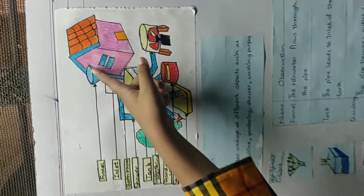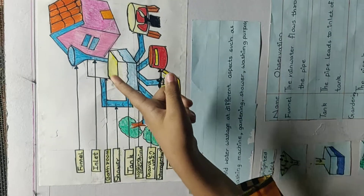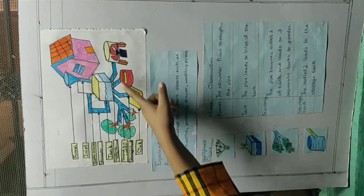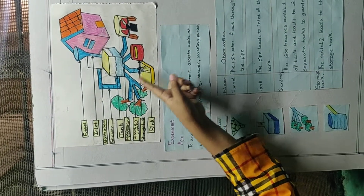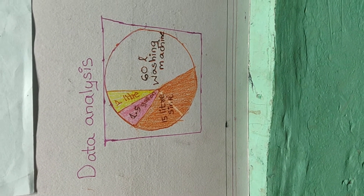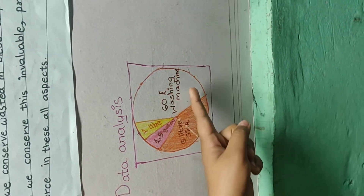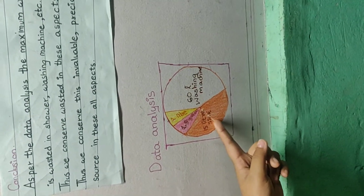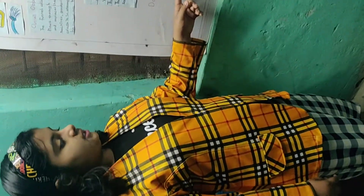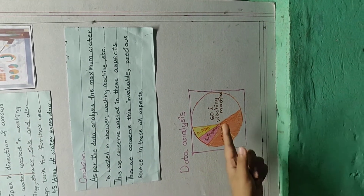The water flows from the funnel and moves in the direction of these arrows to the pipe. The various outlets of the tank lead to the washing machine, storage tank, sink, gardening, and shower. This is the data analysis of where and how much water is used: 60 litres in the washing machine, 15 litres in the sink, 1.5 gallons wasted in the shower per minute, and 1 litre for gardening purposes. As per the data analysis, the maximum water is wasted in the shower and washing machine, so we can conserve this invaluable and precious resource in all these aspects.